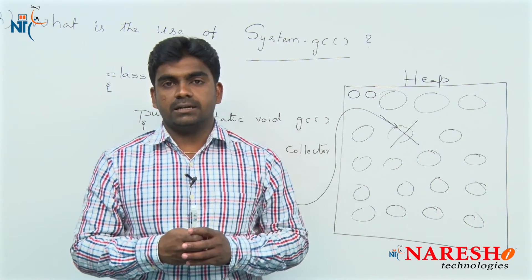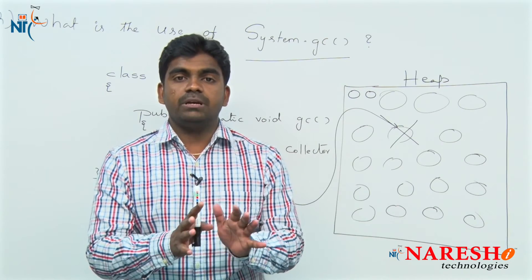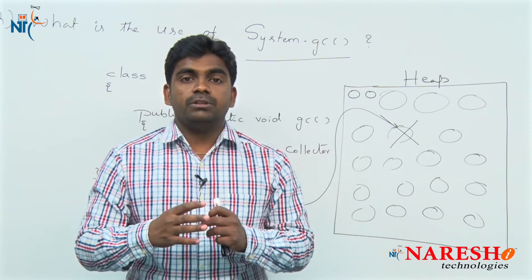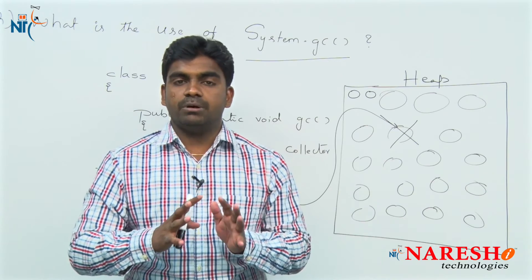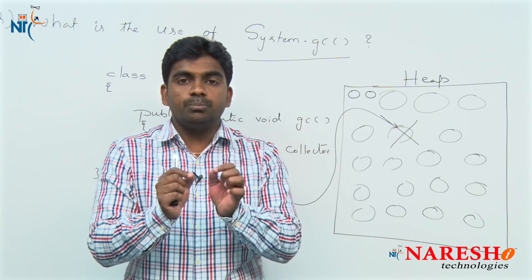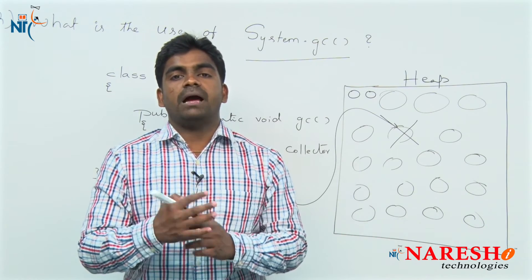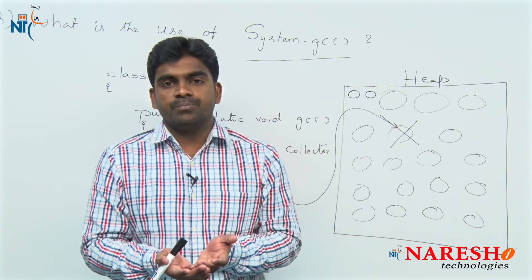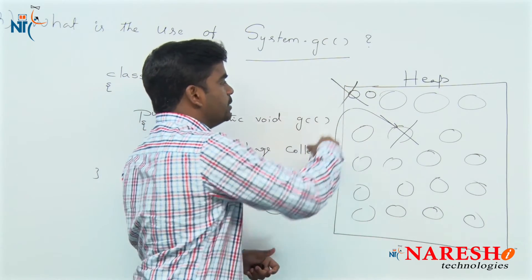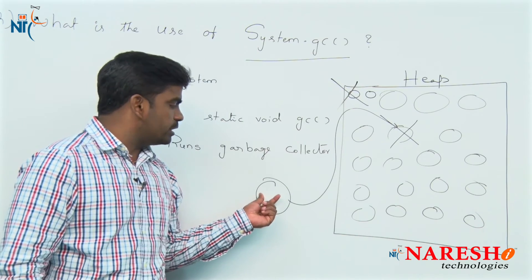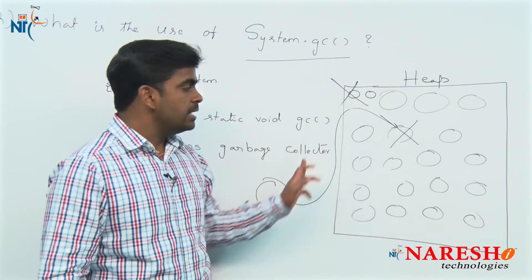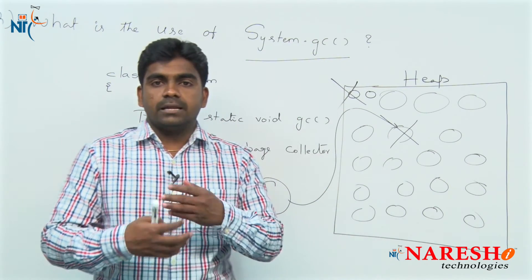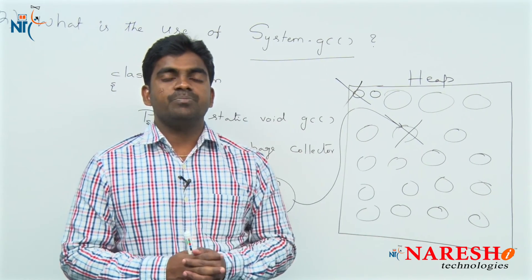That is why the JVM only starts the garbage collector thread when required. But with System.gc() the request is: JVM, please do not worry about application performance — we are using very high-end processors and we will take care of performance ourselves. Please run the garbage collector thread continuously in the background. Multiple requests may be needed for the JVM to start it. The benefit is: whenever an object is eligible for garbage collection it is quickly deleted, space is freed, and the next time we create a new object we do not need to wait — the space is directly available. This is when we use System.gc() externally in a Java application.